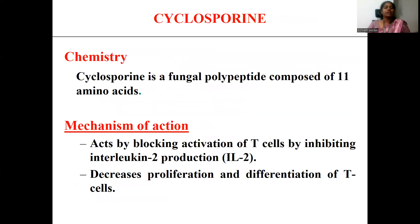We are going to focus on the first important immunosuppressant drug — cyclosporine. Cyclosporine is a polypeptide in nature, isolated from a fungus, and is made up of 11 amino acids.